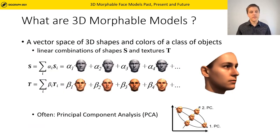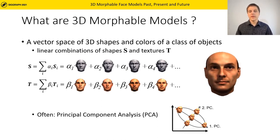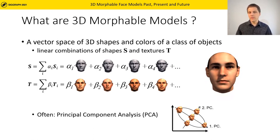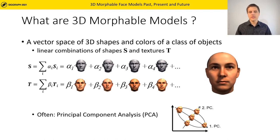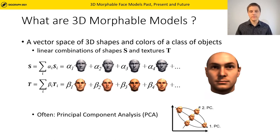Morphable Models are a vector space representation of a class of objects. Each individual face is represented by a shape vector S and a texture vector T. We can form linear combinations to generate new objects. Often principal component analysis is deployed to find the main axis of variation.